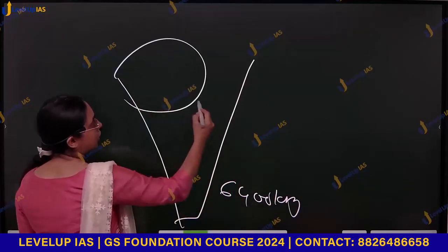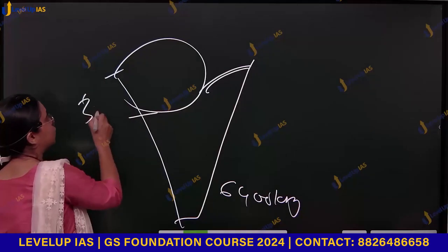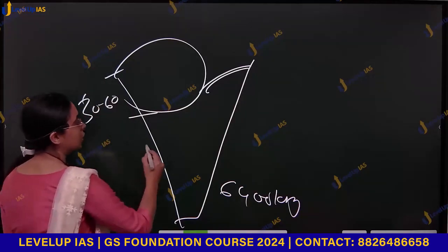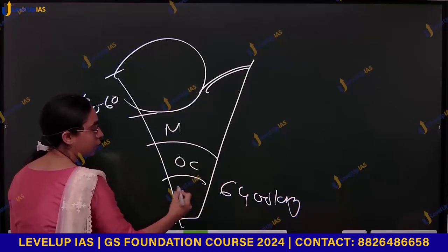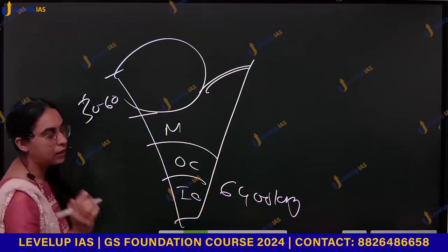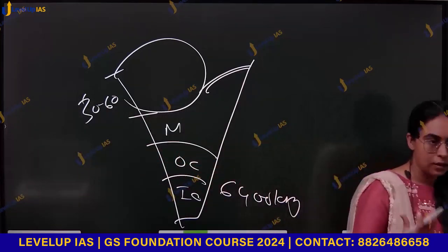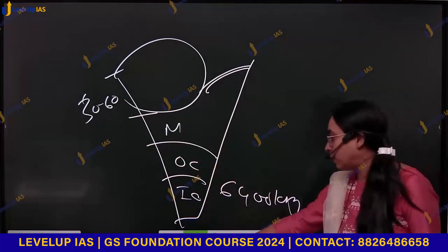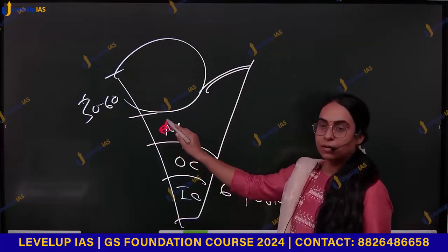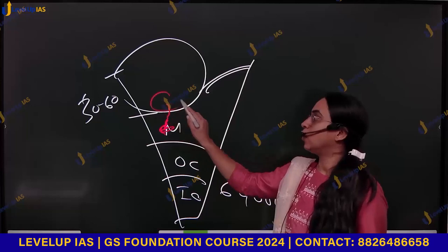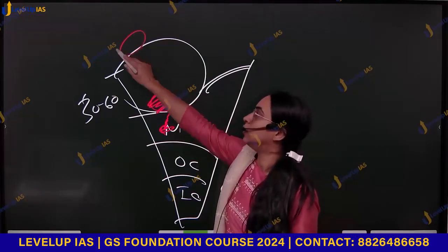You have a crust layer that goes up to 30 to 60 km. Below that is your mantle, then your outer core and inner core. Igneous rocks are formed because of the cooling and solidification of magma, which comes from your mantle. The magma can solidify within the crust or above the crust.